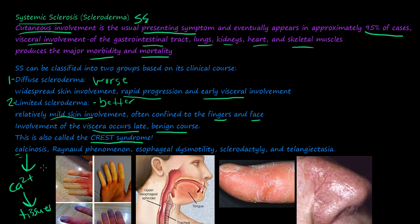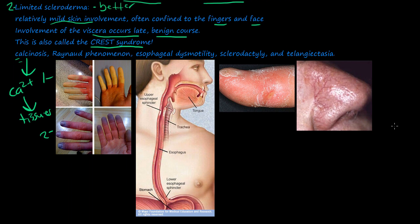R stands for Raynaud's phenomenon. The first step is you get some kind of vasoactive problem and then the skin turns white. After that, you get cyanosis — a bluish coloring of the skin due to ischemia. That's Raynaud's phenomenon, which we'll talk about a little bit later.